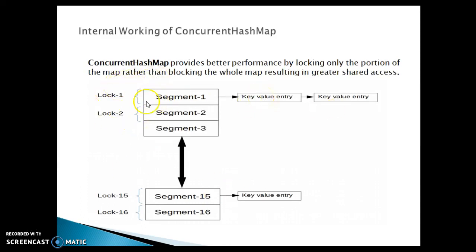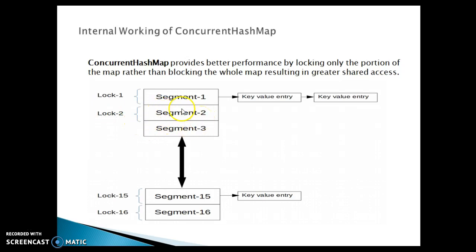In ConcurrentHashMap, at one time 16 threads can do write operations in different segments, but more than one thread cannot do a write operation on the same segment at a time. However, if one thread is doing a write operation on segment 1, another thread can read data from that same segment. So read and write may overlap, but two writes on the same segment cannot overlap.